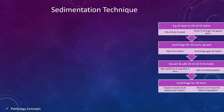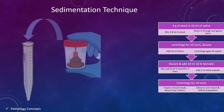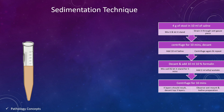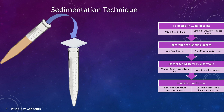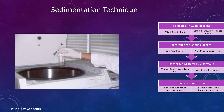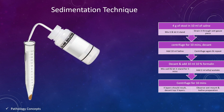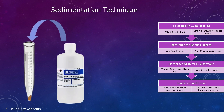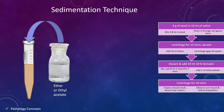Now let's learn the sedimentation technique. Take 4 grams of stool in a conical tube and add 10 ml of saline. Mix it well and let it stand. The next step is to strain it through a wet gauze piece. Then centrifuge it for 10 minutes and decant. After decanting, add 10 ml saline and centrifuge again. Repeat and decant. Then add 10 ml of 10% formalin, mix well and let it stand for 5 minutes. After 5 minutes, add 2 ml ethyl acetate.